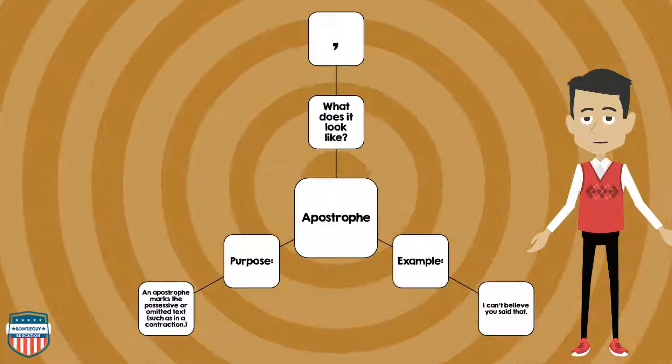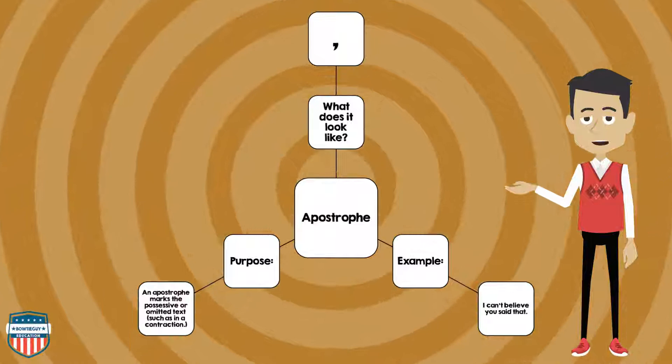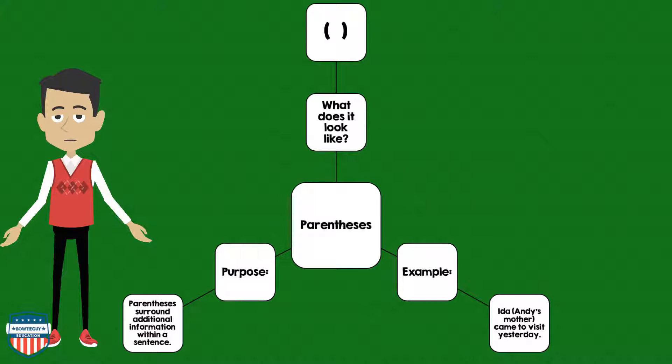Now, let's talk about the apostrophe. The apostrophe is like a comma, but is actually used in a different section of a sentence. An example of an apostrophe: I can't believe you said that. Notice where the apostrophe is. The purpose of an apostrophe marks the possessive or omitted text, such as in a contraction.